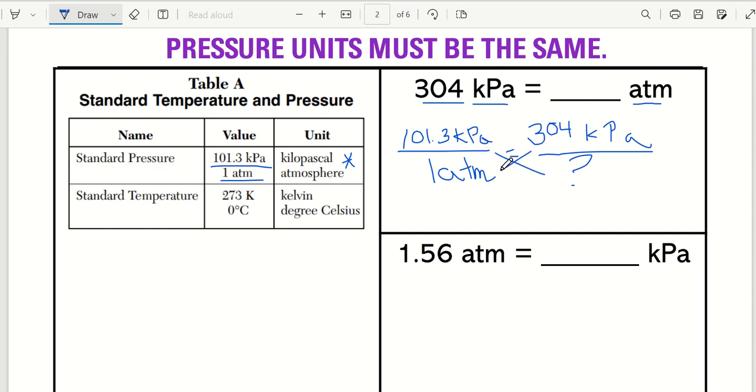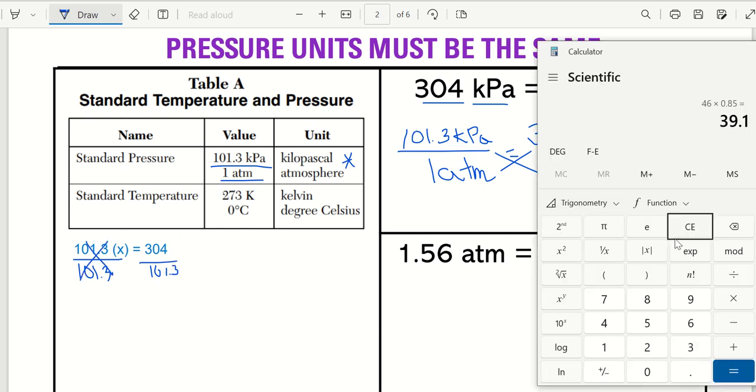How do I solve this? Cross multiply. So what do I get when I cross multiply? I'm just going to type it over here. I get 101.3 times my variable equals, well, 304 times one. Well, that's easy. That's just 304. So now what do I do? Because I want to solve for x. So how do I solve for x? I'm going to divide both sides by 101.3 divided by 101.3. So what did that do? On this side, that cancels out. And this is my answer.